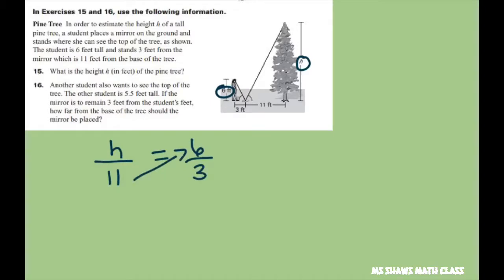You cross multiply and you get your height equals 66 divided by three. So your height is going to be 22 feet.